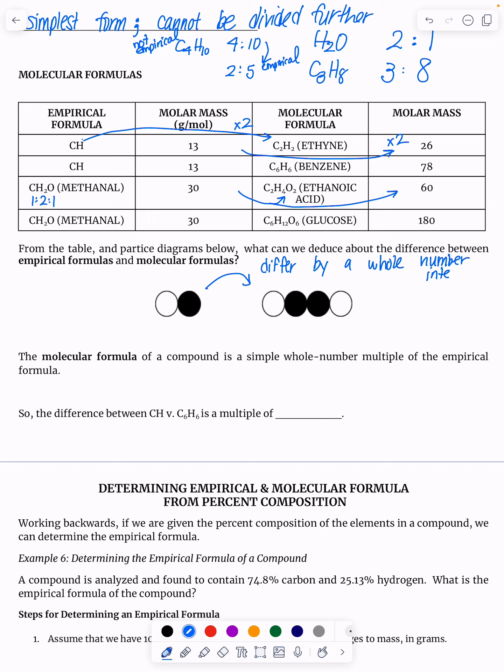So if I look at this little particle diagram example, if this is CH, what would this be? Well, there's two C's, two H's. This would be C2H2. And all I did was multiply this by two. So I doubled the individual unit of CH.